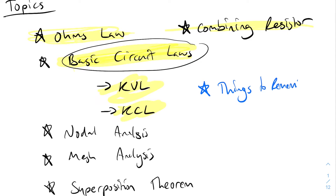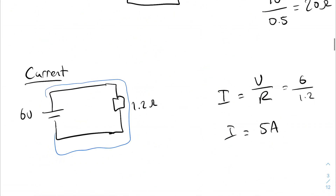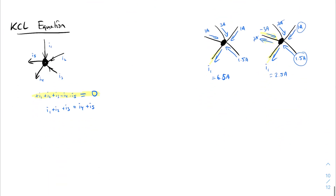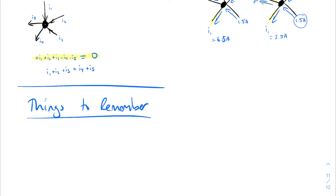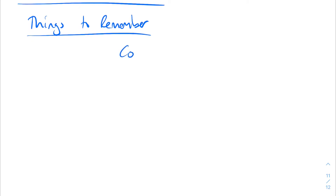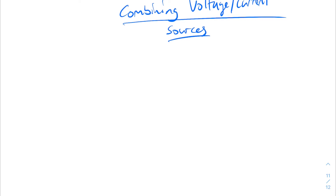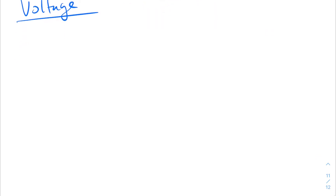So in the last video we ended on KCL equations. Now I want to start off with combining current and voltage sources. We've touched previously on combining resistors, so this time I want to get onto voltage and current sources. Let's first touch on voltage - what I mean by combining voltage sources and current sources. Let's draw a circuit.